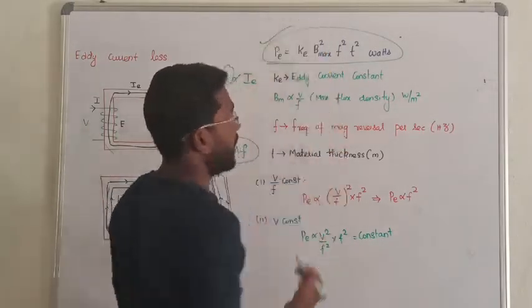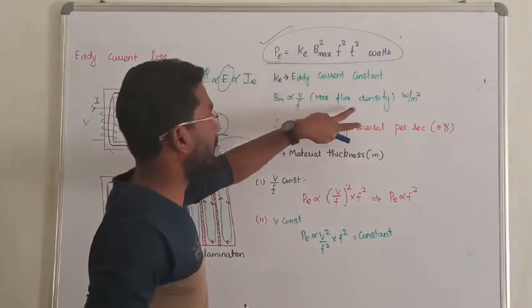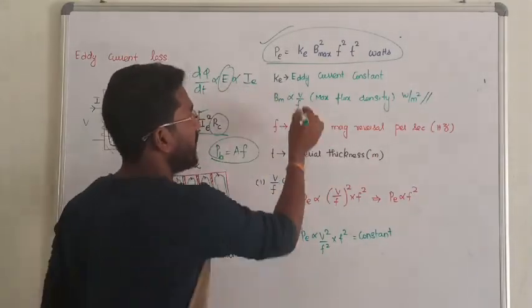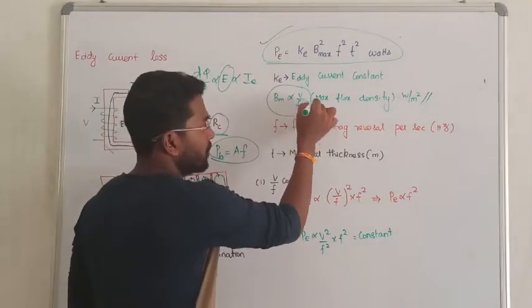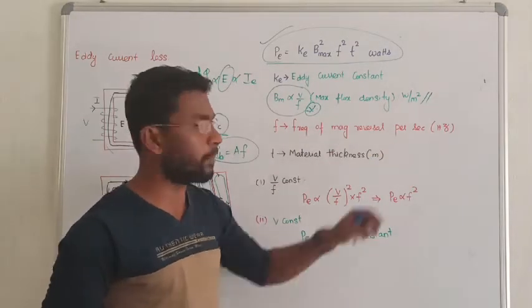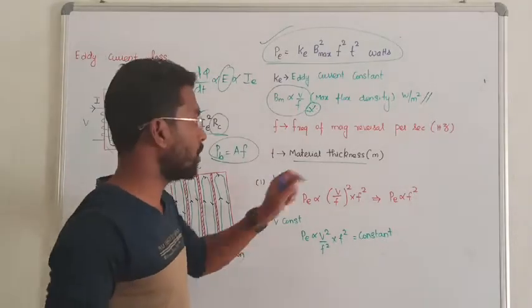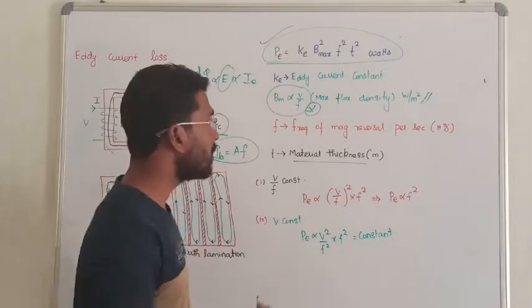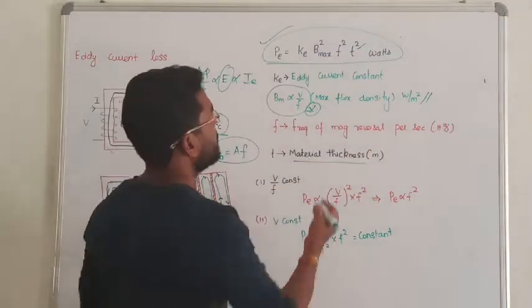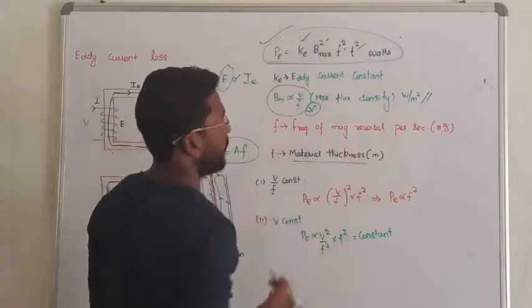Next, so this is the general formula to obtain the eddy current loss, where K denotes the eddy current constant. B max, that is the maximum flux density, unit is Weber per meter square. We all know maximum flux density is directly proportional to V by F, very important term. F is the frequency of the magnetic reversal per second. T denotes the material thickness. Now I use the material thickness here, that is in meter usually. But now the transformer design mode formula, thickness will become constant. Eddy current constant also become constant. So the variable quantity is B max and F.